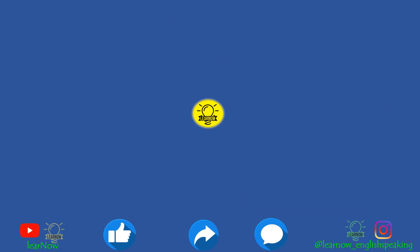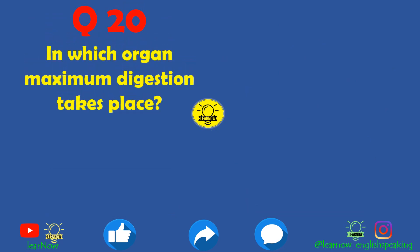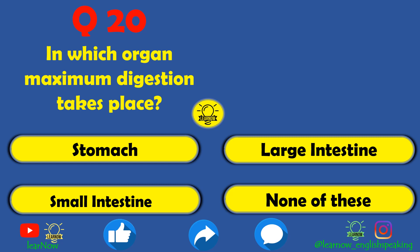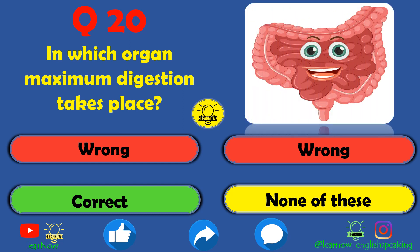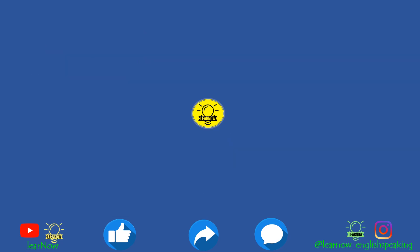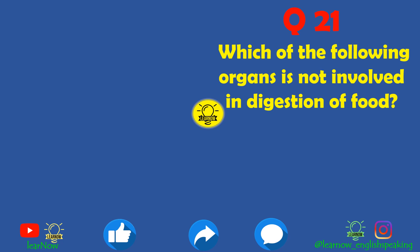Next question: in which organ does maximum digestion take place? Stomach is wrong, large intestine is also wrong. Small intestine is the correct answer — in the human body maximum digestion takes place in the small intestine, which is a key part of our digestive system.